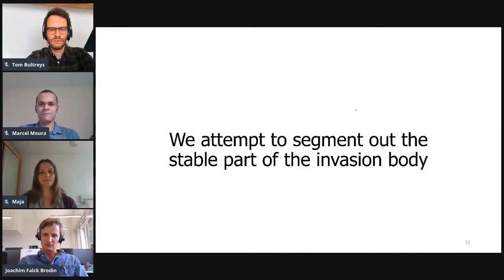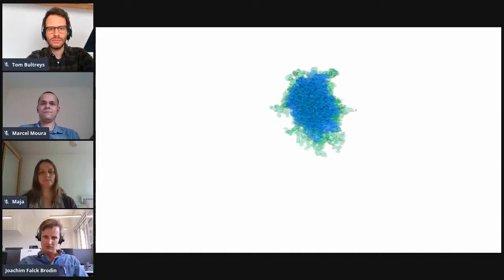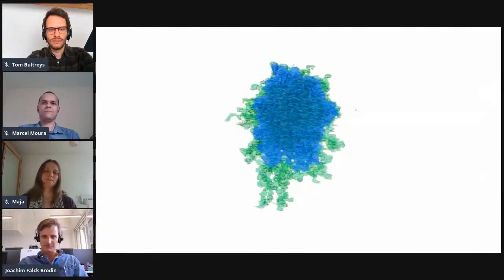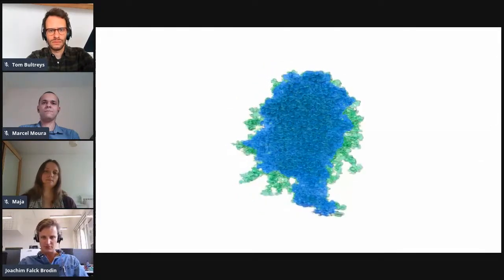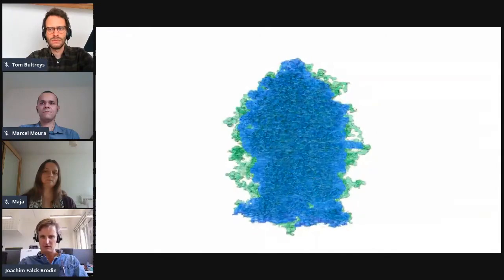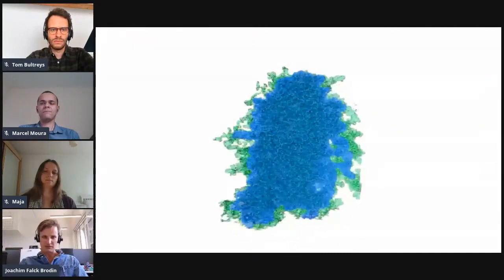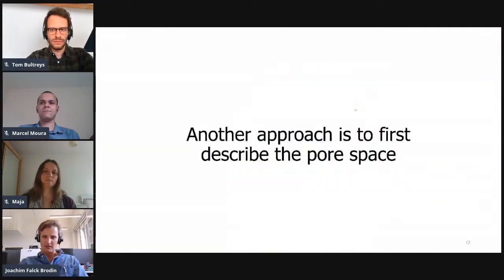We've seen that there is a zone with near complete invasion near the inlet, and this zone is increasing as the flow rate is increased. The massive blob of our structure is getting bigger with flow rate. We can try to segment out this stable massive part and see if it has some sort of functionality with flow rate. One method is a morphological opening — a process called erosion dilation. There are many ways you could approach this; this is just one.